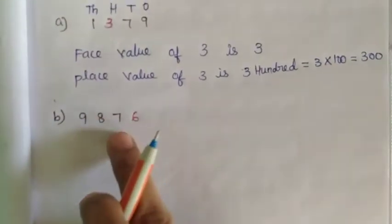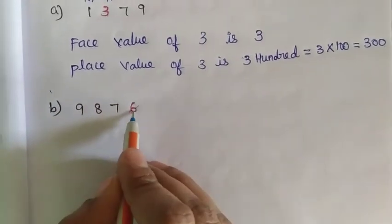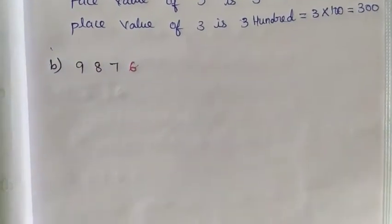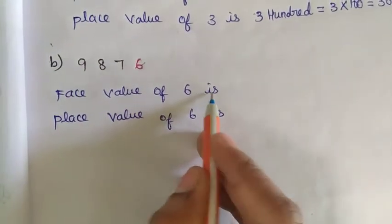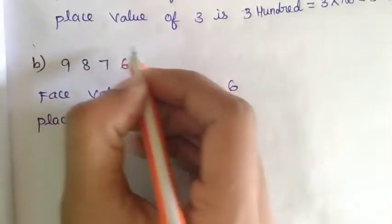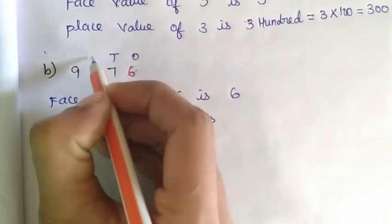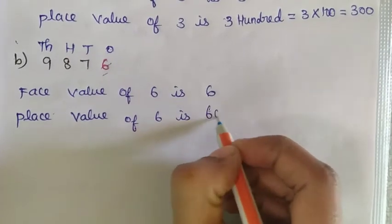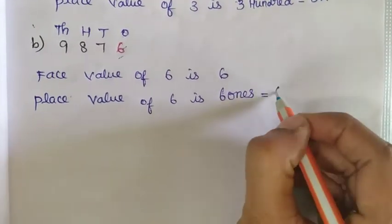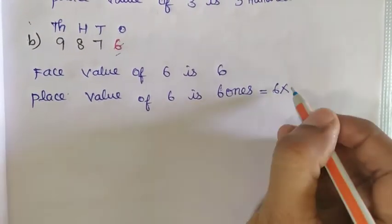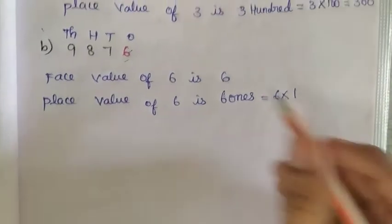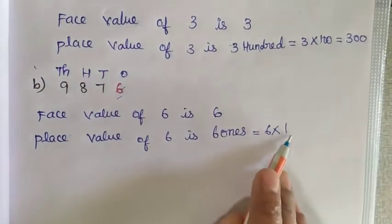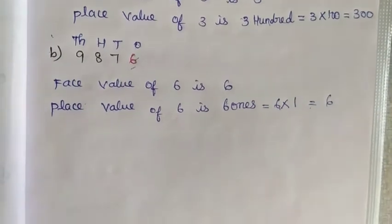Second question: we want to find the place value of 6. Face value of 6 is 6. For place value, put the unit digit. 6 is sitting in which place? 1's place. So write 6 ones equals 6 multiplied by 1. 6 into 1 equals 6. This is the answer.